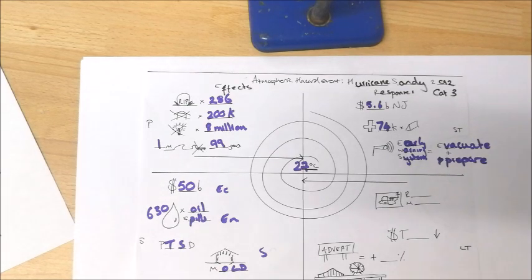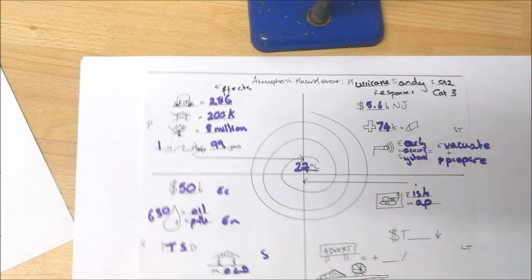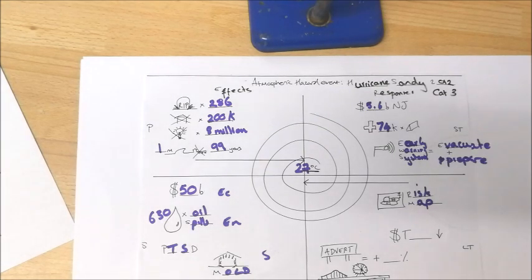In terms of the long term responses, what they did was they created a risk map. This basically looked at the area of New Jersey that was hit by Hurricane Sandy and looked at areas that were particularly damaged by, for example, the storm surge. So areas that have been built on that were below sea level, very close to sea level and therefore easily flooded. These areas were therefore designated as of high risk and were not rebuilt in or not used for things like residential properties.